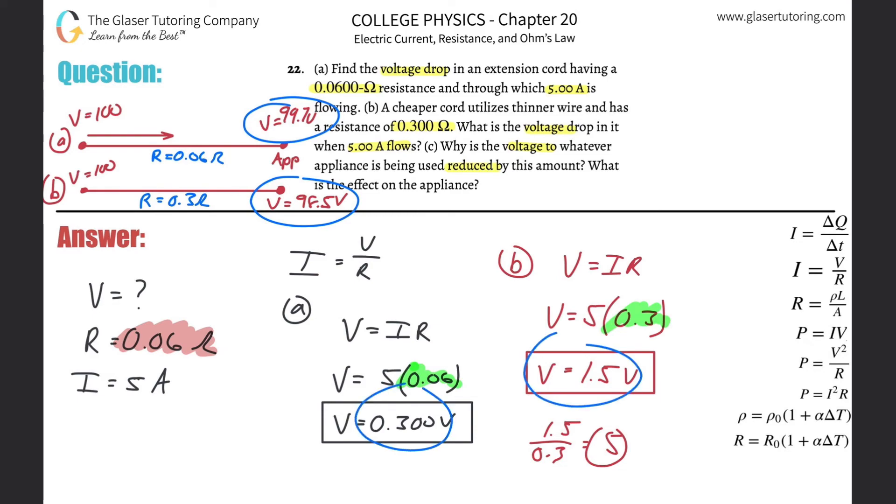If that potential drop is measured from, let's say a voltage of 100, we have to take that potential drop and apply it to basically a starting voltage of 100, it's really minuscule.